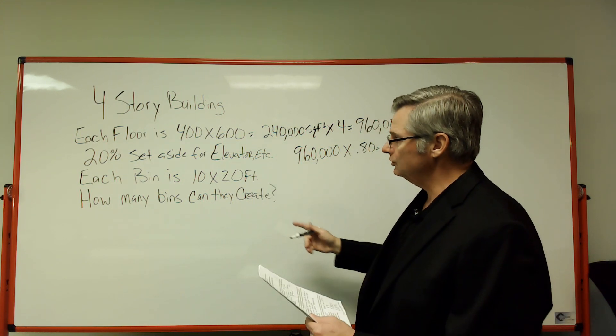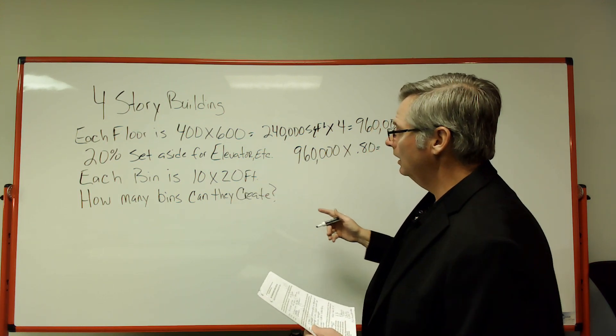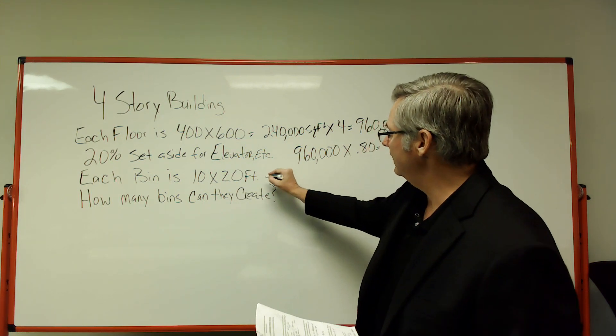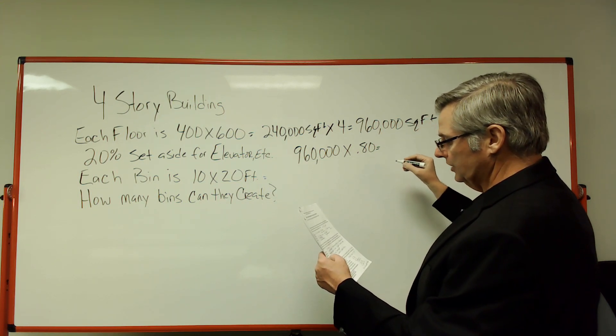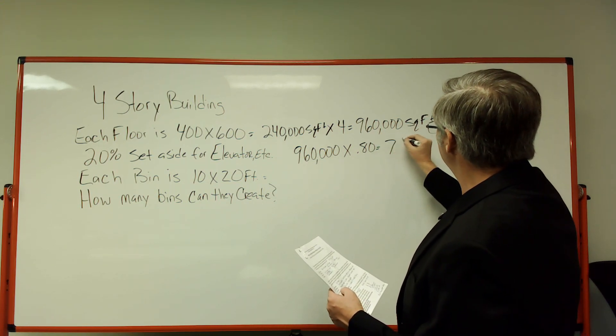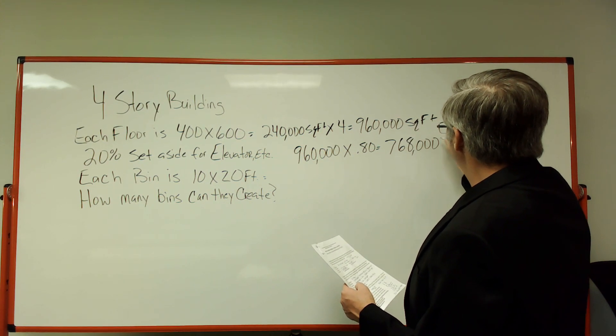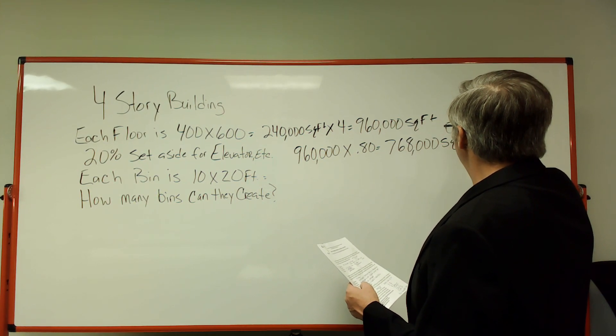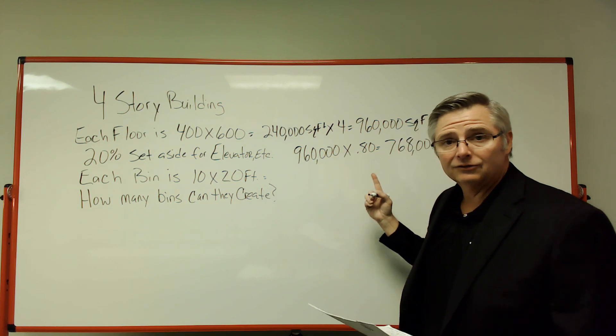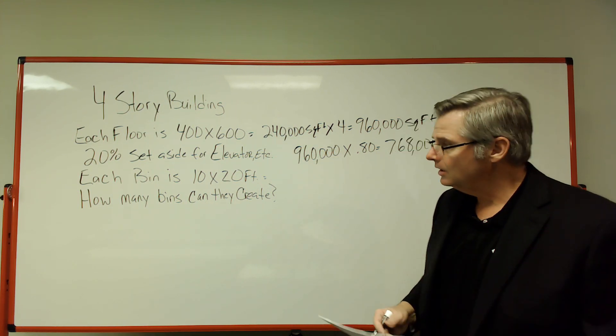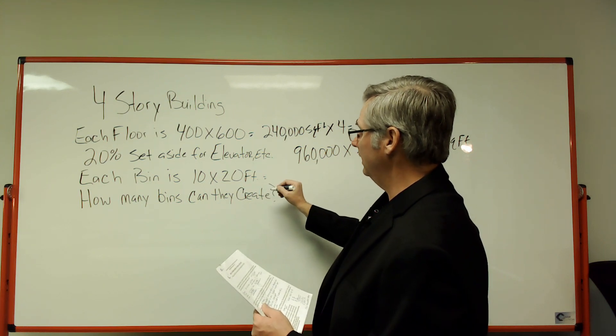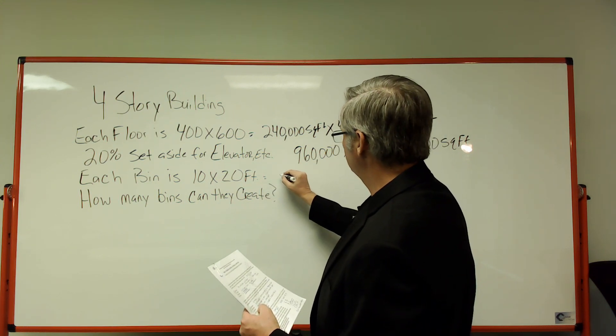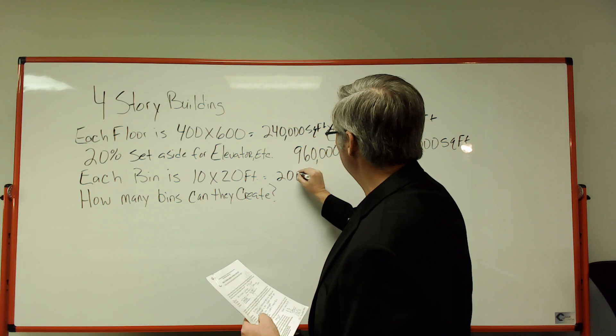It says here that each bin is 10 by 20. So we're going to figure that out in just a second. But 960,000 times 80% is 768,000 square feet. That's how many square feet I got to use. These storage bins are 10 by 20, which comes out to 200 square feet. Each one of these is 200 square feet.